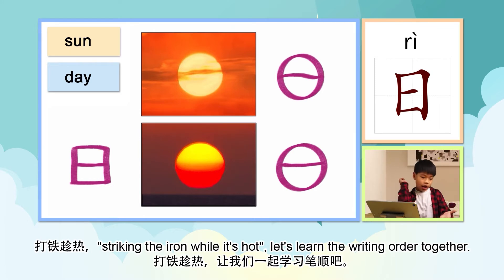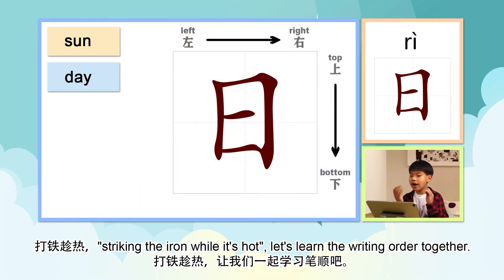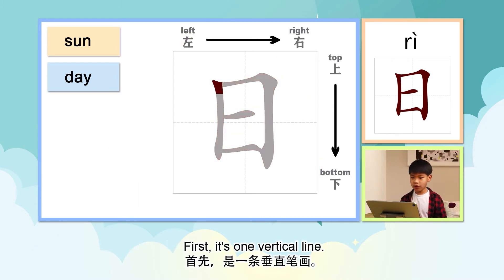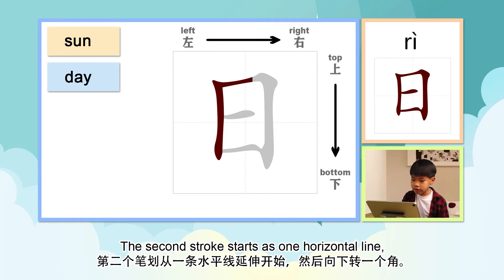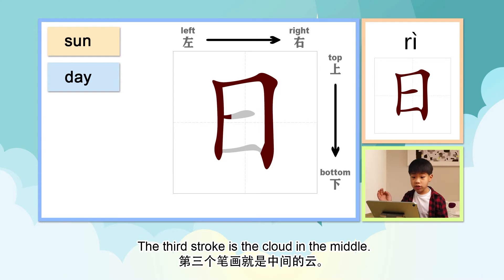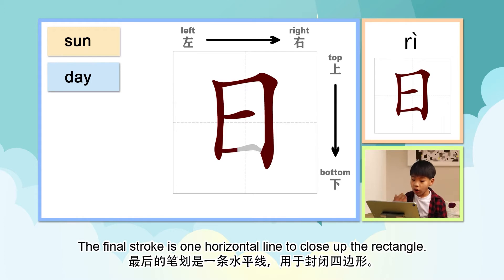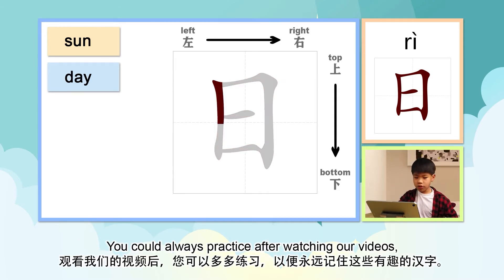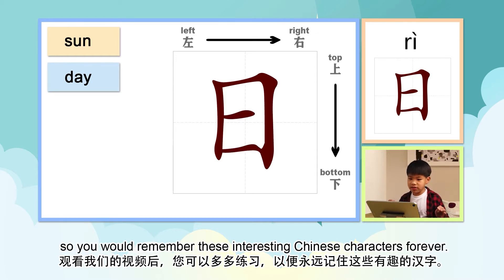打铁趁热 — striking the iron while it's still hot. Let's learn the writing order together. First, it's one vertical line. The second stroke starts as one horizontal line, extends the line, and turns the corner down. The third stroke is the cloud in the middle. The final stroke is one horizontal line to close up the rectangle. You can always practice after watching our videos, so you will remember these interesting Chinese characters forever!